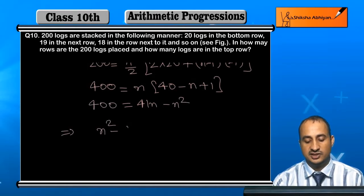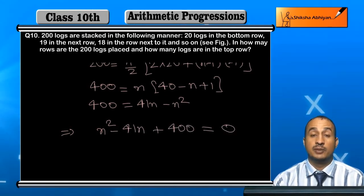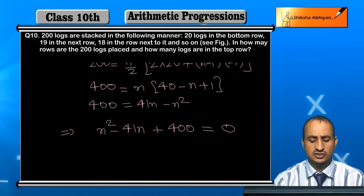Now this becomes n squared minus 41n plus 400. And 400 equals 25 times 16.